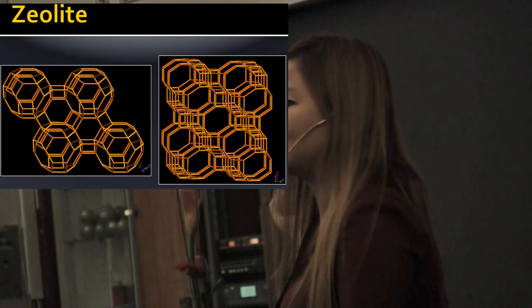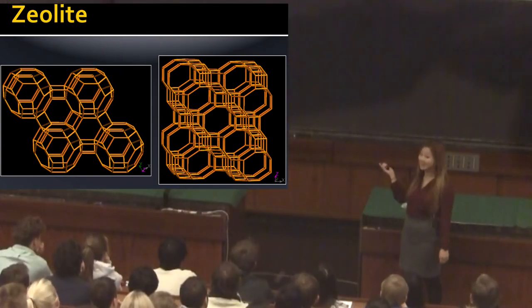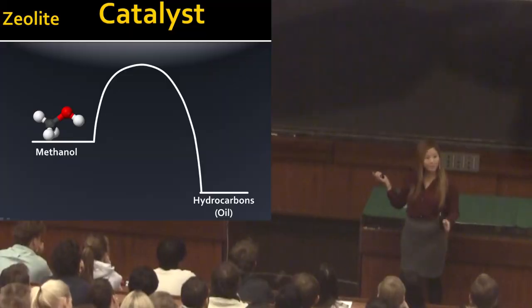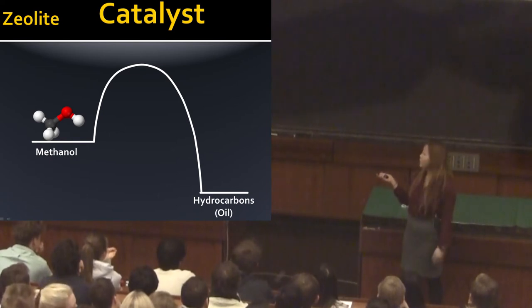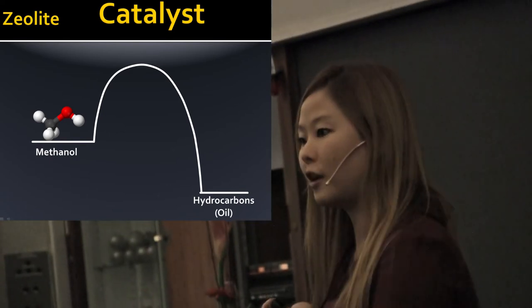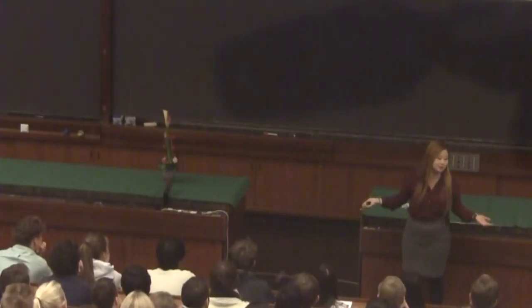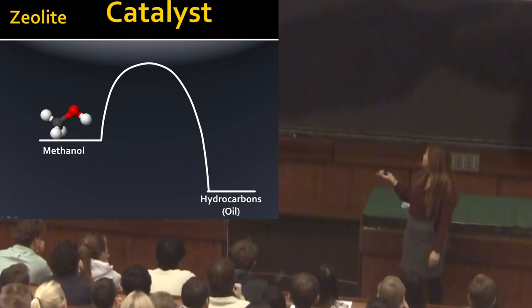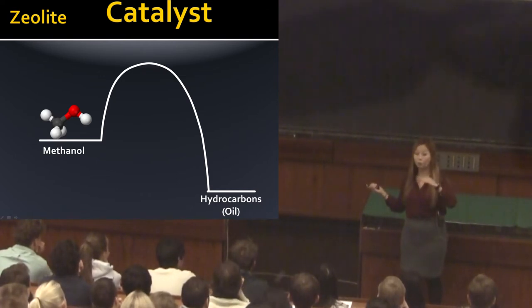The second ingredient will be zeolite. What is zeolite? Zeolite acts as a catalyst. Let's say there is a hill which methanol has to climb up. If methanol has enough energy, it will climb up and become a product, which is oil. However, if methanol doesn't have enough energy, there will be no reaction. This is where zeolite functions — with the zeolite, the hill becomes lower.